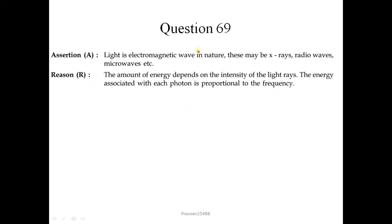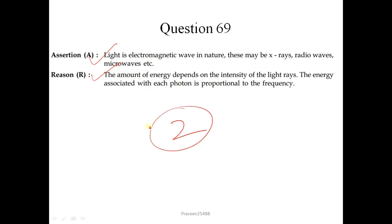Question number 69. Light is electromagnetic in nature — including x-rays, radio waves and microwaves — this is correct. The amount of energy depends on the intensity of the light waves, and the energy associated with each photon is proportional to the frequency — this is also correct but it is not the correct explanation of the given assertion. So we will use option 2.